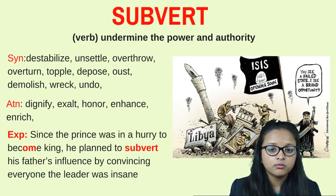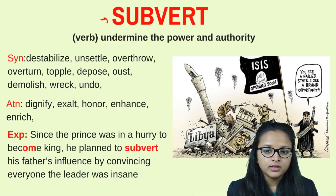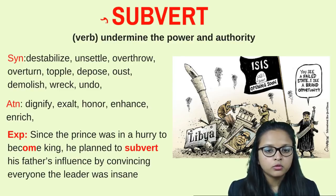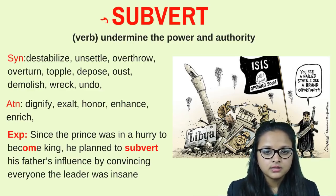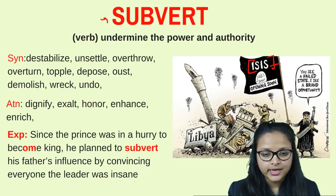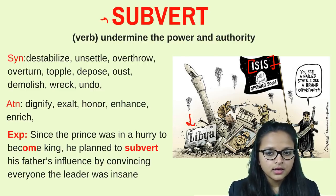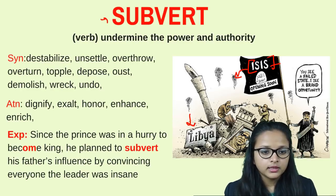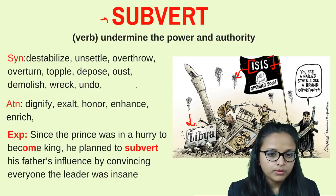The last word is 'subvert,' which means to undermine power and authority. For example, people of a nation come together and protest against the ruling government — they want to demolish the power the government has and remove them from authority. ISIS is subverting authority in Libya and targeting other nations, attacking and trying to topple their powers. Synonyms are destabilize, unsettle, overthrow, depose, or demolish.